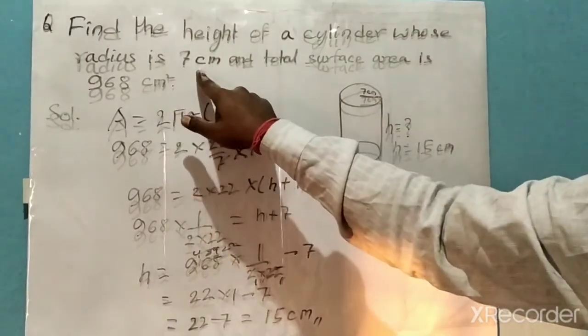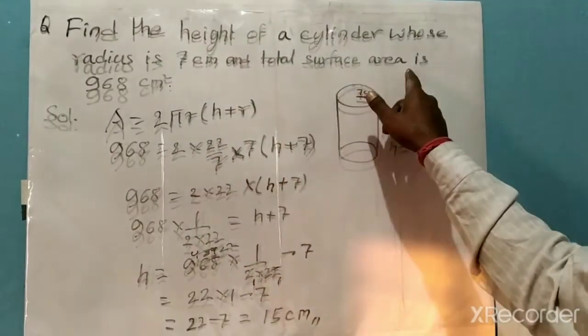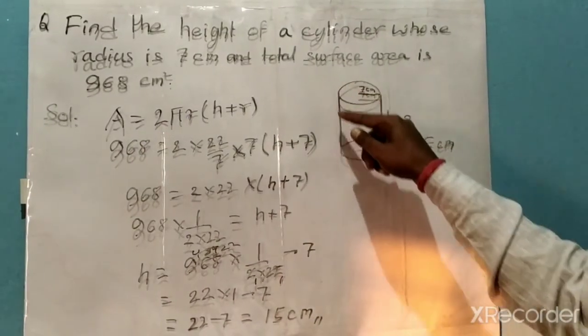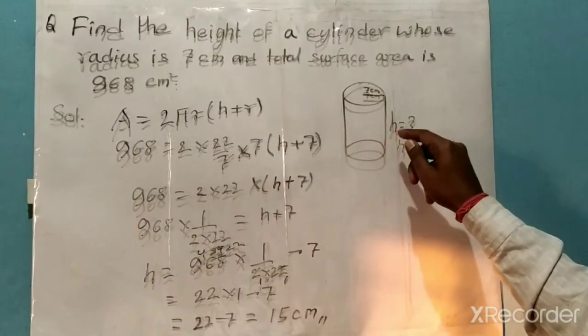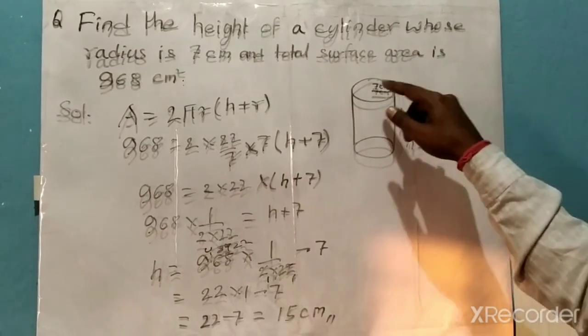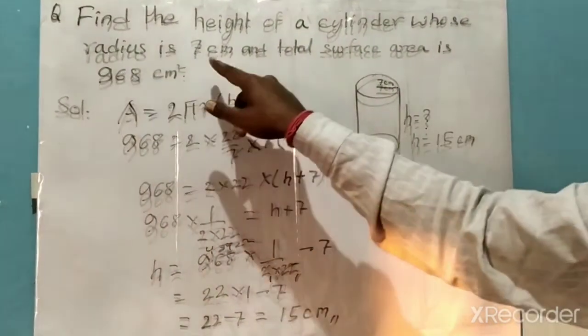Let's revise. The question is: find the height of a cylinder whose radius is 7 centimeters and total surface area is 968 square centimeters. The geometrical shape is cylindrical. We have to find the height.